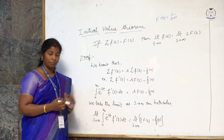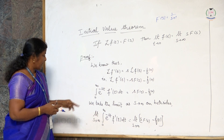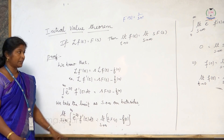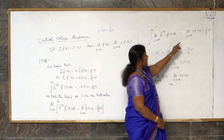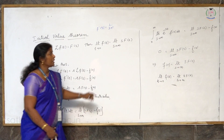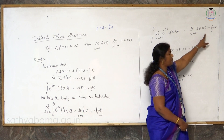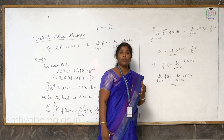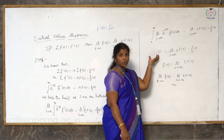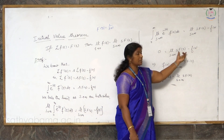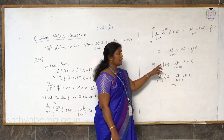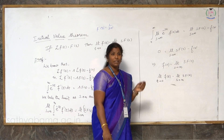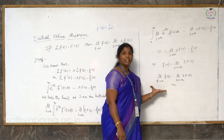Now, if we take the limit as s tends to infinity on both sides: since s and t are independent, we can bring this limit inside the integral. On the right hand side, since f(0) is independent of s, we get limit s tends to infinity of s·F(s) minus f(0). On the left hand side, when we apply the limit s tends to infinity, e to the power minus infinity is 0, so the entire left hand side becomes 0. Therefore, 0 equals limit s tends to infinity of s·F(s) minus f(0), which gives f(0) equals limit s tends to infinity of s·F(s). Since f(0) is the value of f(t) at t = 0, we have proved the initial value theorem.